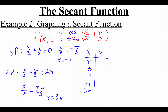Plugging in x = −π: (−π/2 + π/2) = 0, cosine of 0 is 1, times 3 is 3. Plugging in x = 0: (0 + π/2) = π/2, cosine of π/2 is 0, times 3 is 0. Plugging in x = π: (π/2 + π/2) = π, cosine of π is −1, times 3 is −3. Plugging in x = 2π: (π + π/2) = 3π/2, cosine of 3π/2 is 0, times 3 is 0. Plugging in x = 3π: (3π/2 + π/2) = 4π/2 = 2π, cosine of 2π is 1, times 3 is 3.